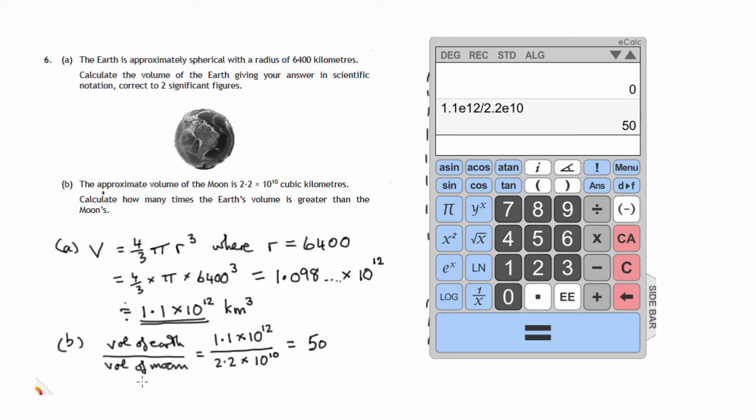So how many times the Earth's volume is greater than the Moon? Earth's volume is 50 times the Moon's volume.